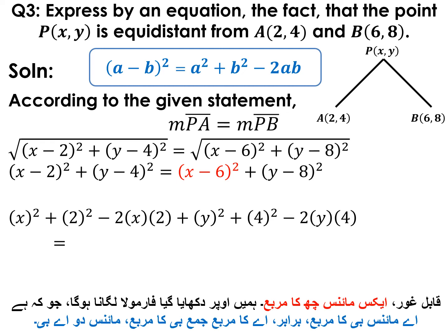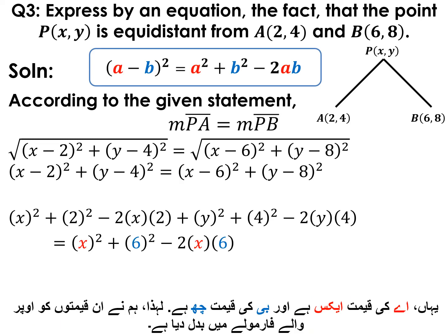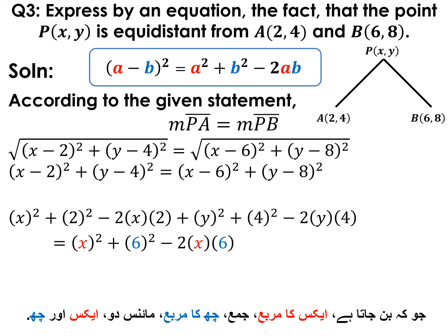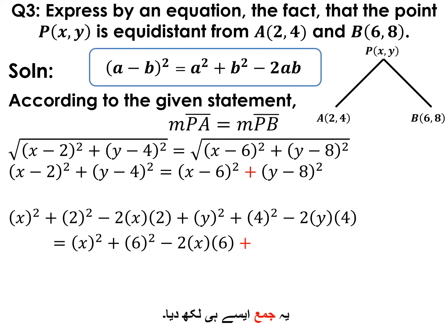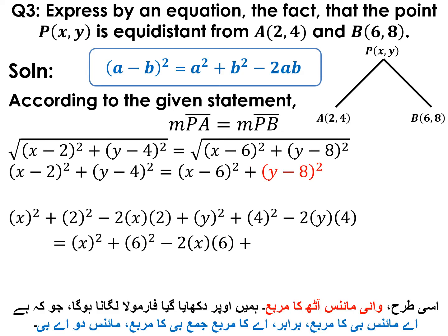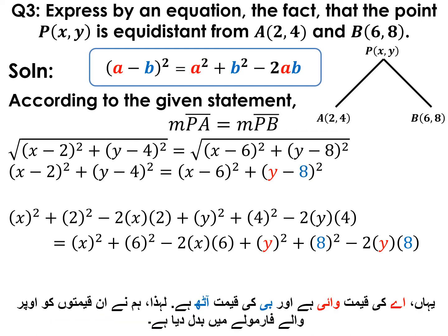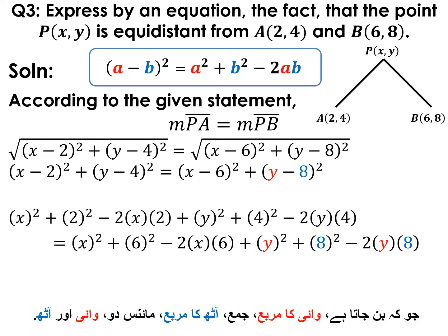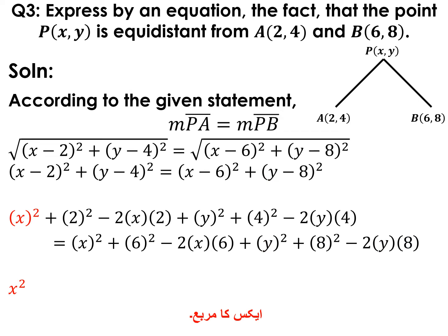For (x − 6)², we apply (a − b)² = a² + b² − 2ab with a = x and b = 6, giving x² + 36 − 12x. Similarly, for (y − 8)², a = y and b = 8, giving y² + 64 − 16y.